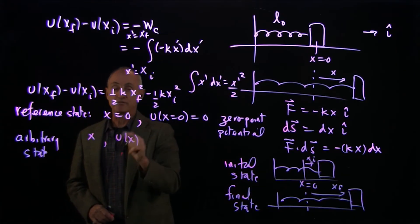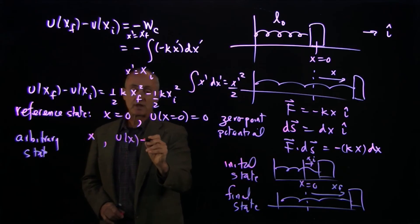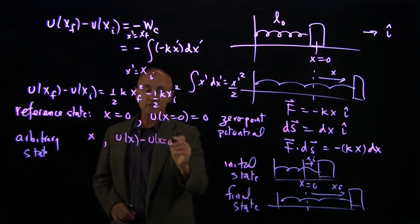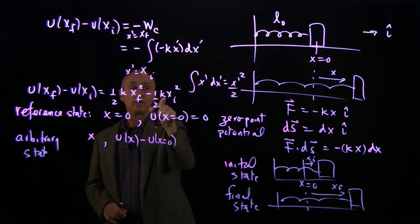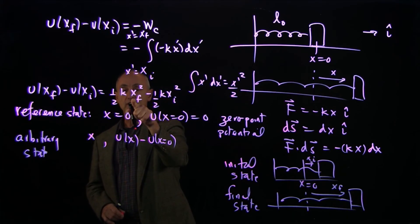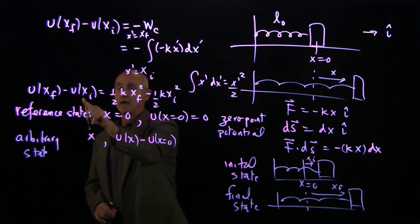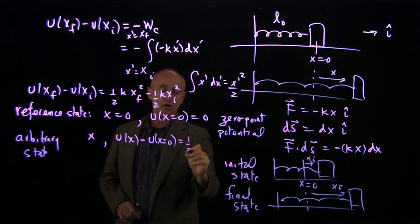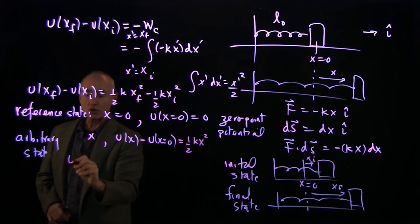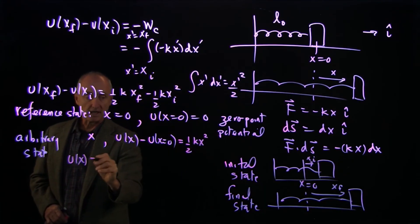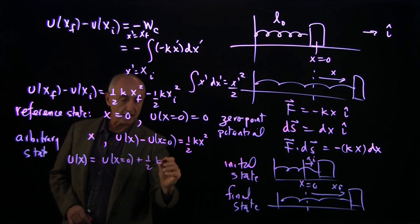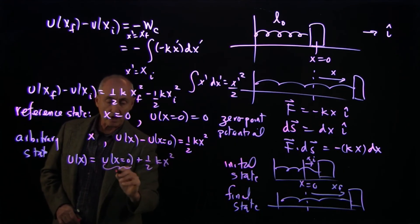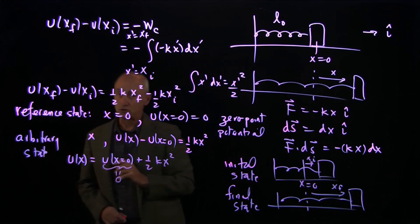And our potential energy function at that arbitrary state minus the reference state. Well, if we set x initial equal to 0 and x final equal to x, as we have in this expression, we simply get 1/2 k x squared. So the potential energy function equals our reference potential plus 1/2 k x squared. And we've defined that our reference potential to be 0.